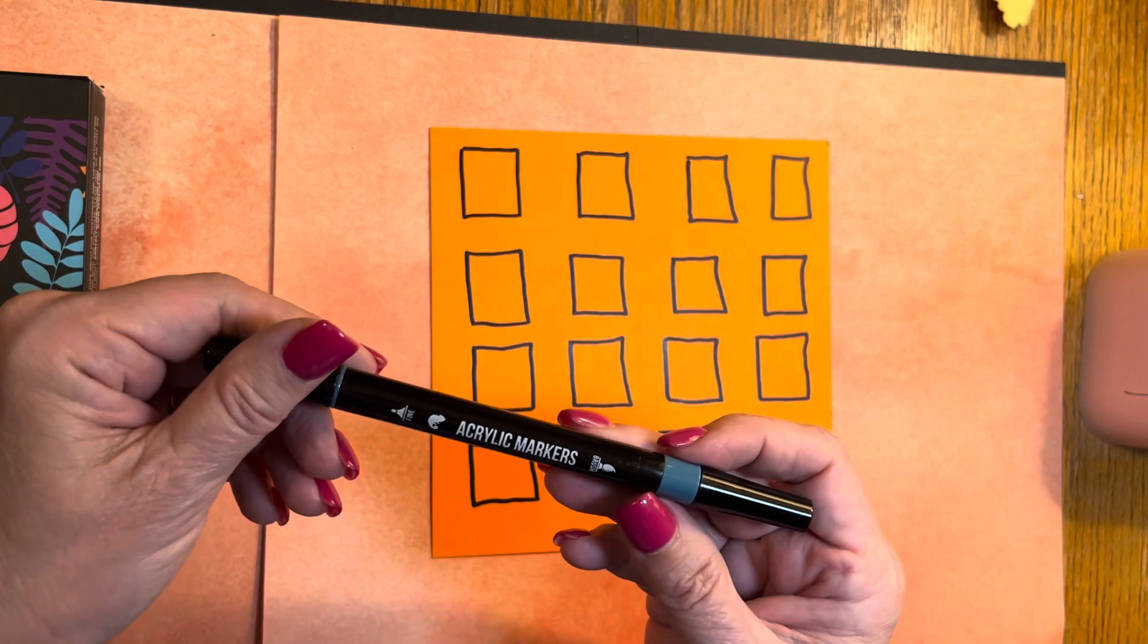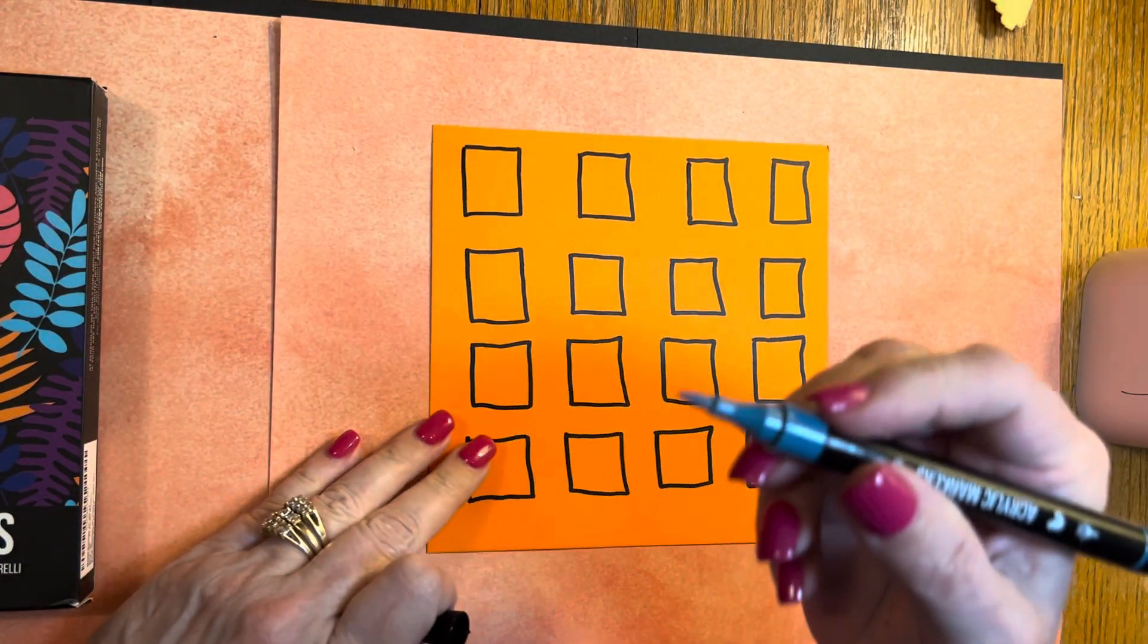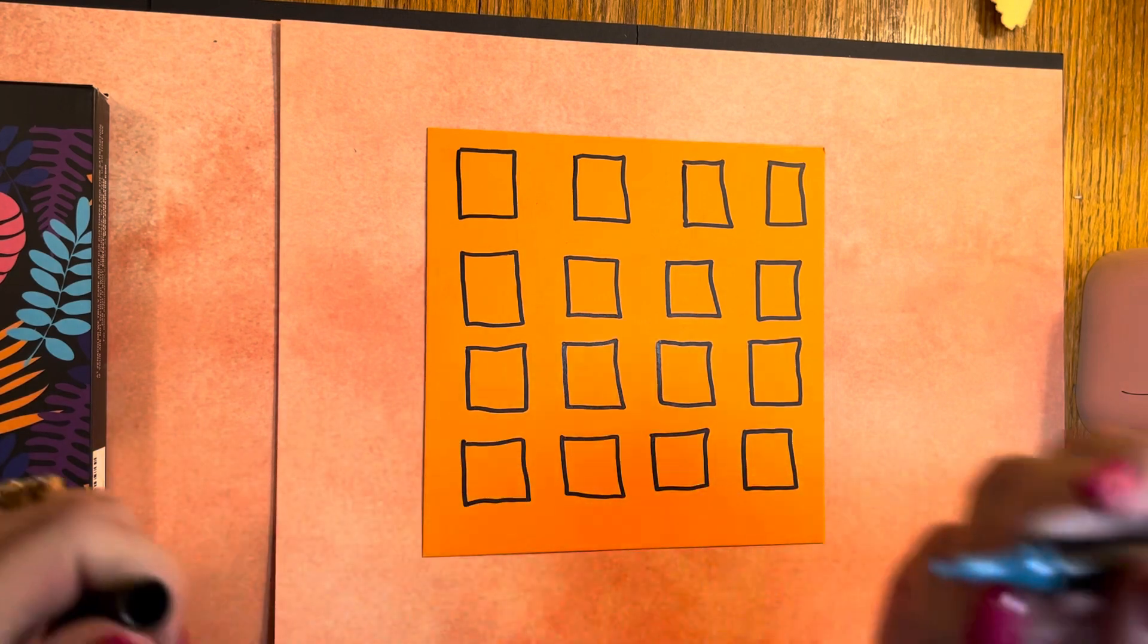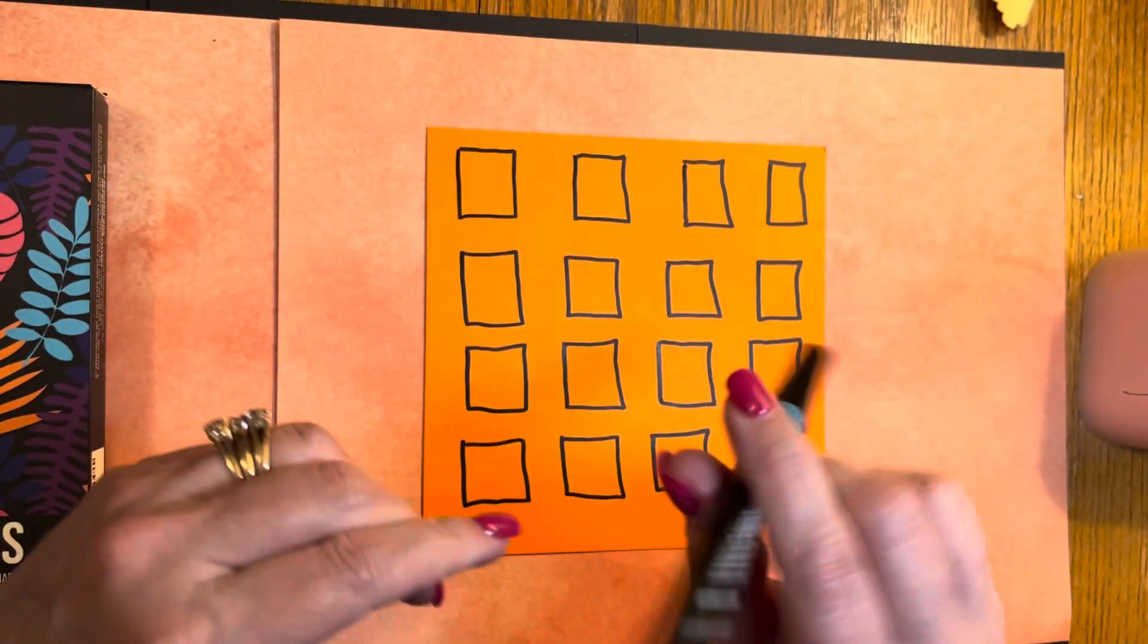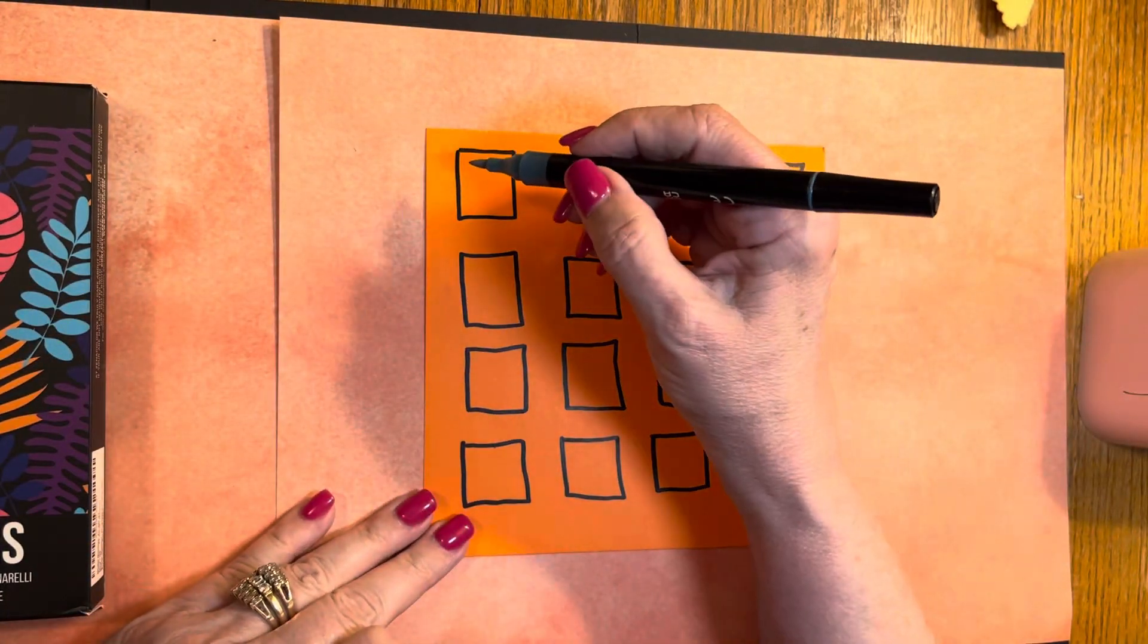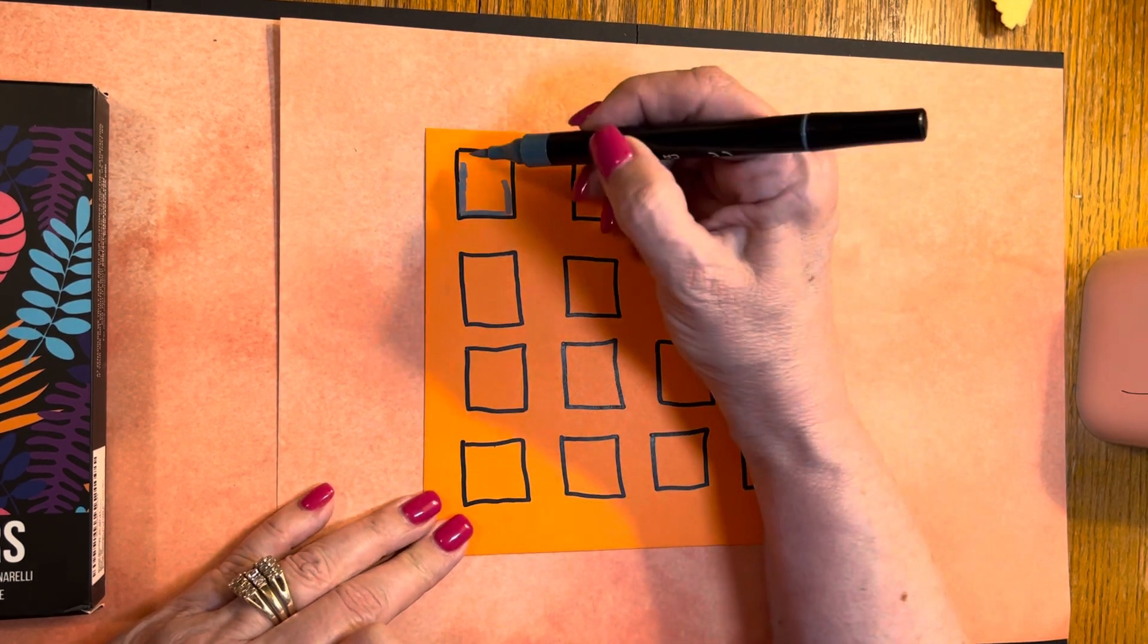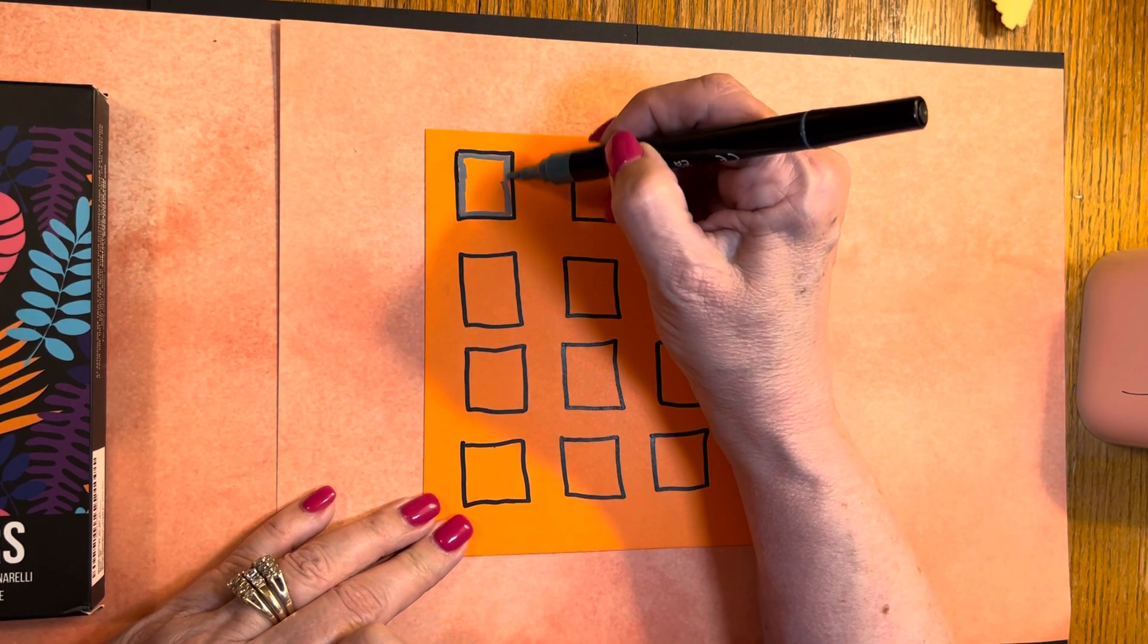This is a, looks like a gray. And I am going to, there's a brush end of these and a fine line of these. I'm just going to be using the brush because I just want to see the color. That's pretty nice. This is a gray, obviously. And that's the brush end.